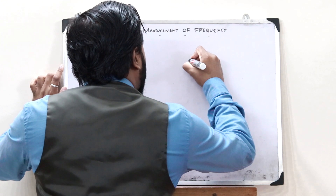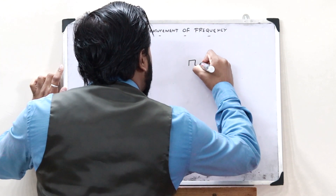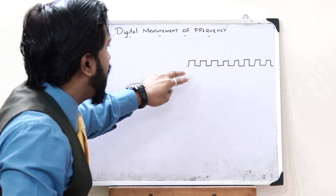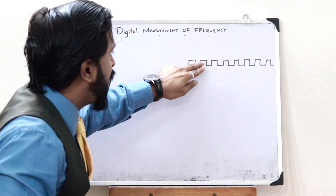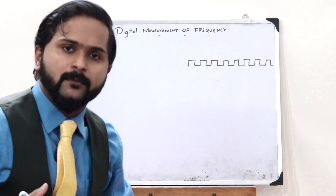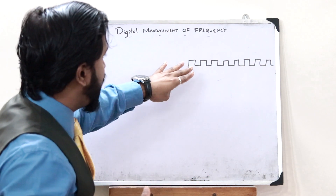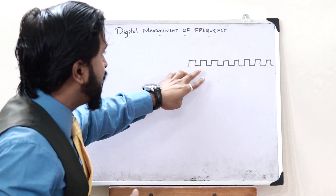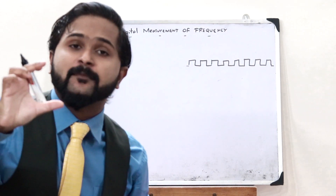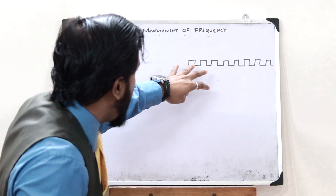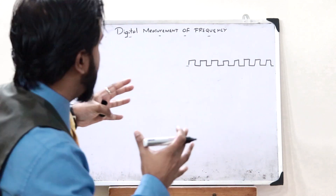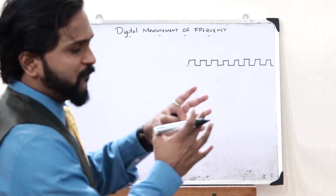Let us consider a particular periodic signal like this. A periodic signal means that each of these pulses occurs after a particular period of time — that is, they repeat after a particular period of time. The frequency of this signal is defined as the number of pulses per unit time. The unit of time is seconds, so the number of pulses of this particular signal per second — that is the frequency of this particular signal.